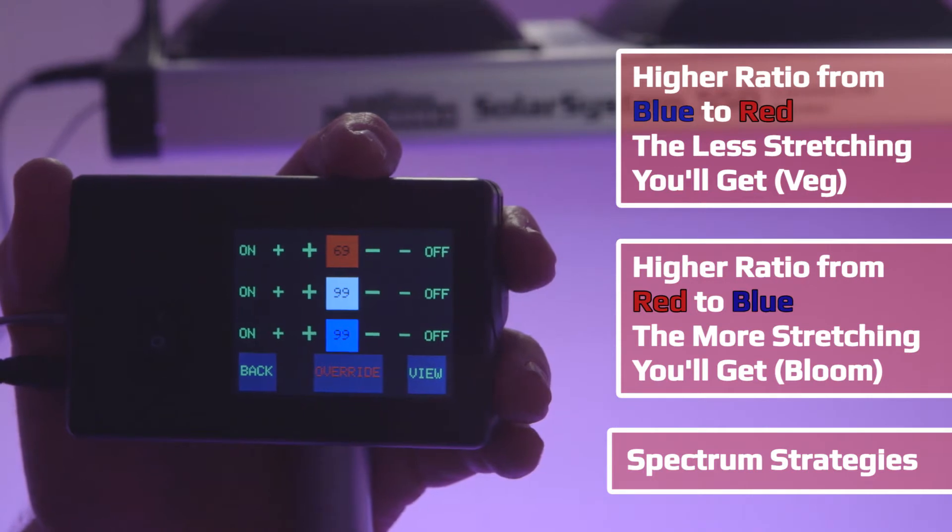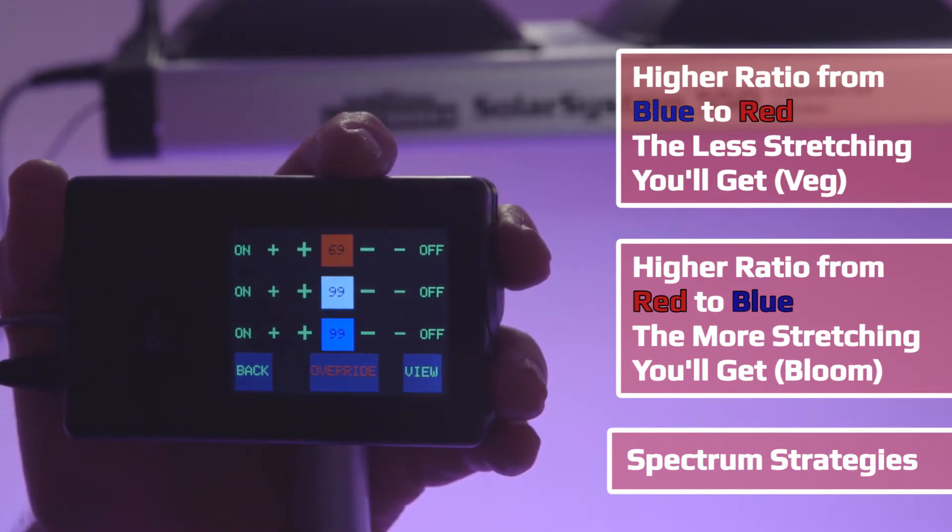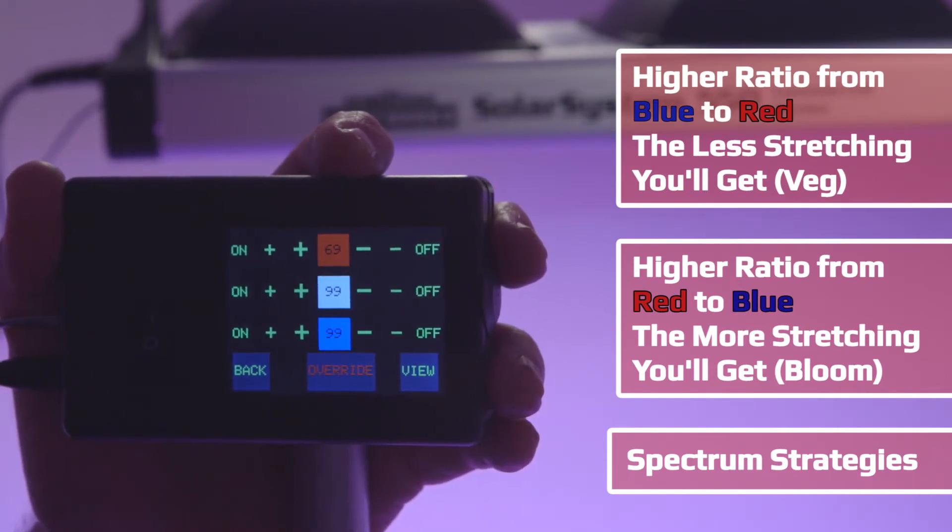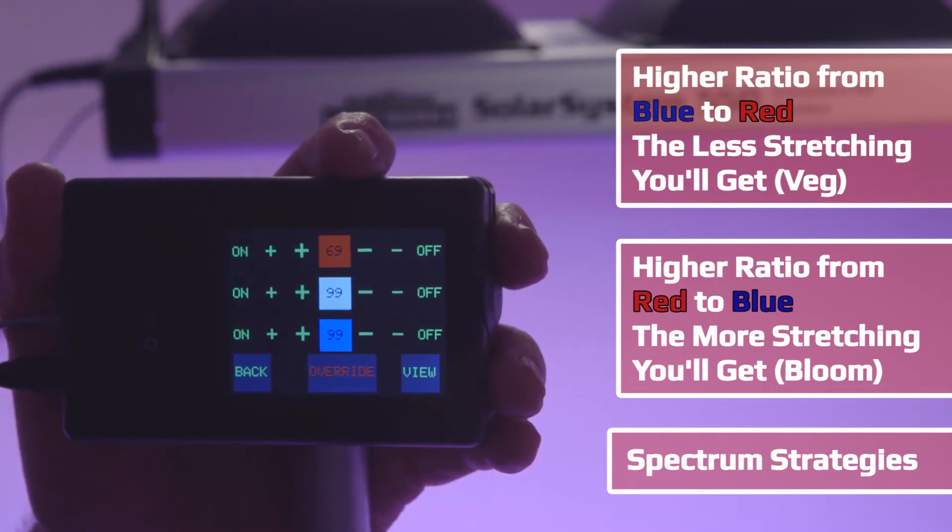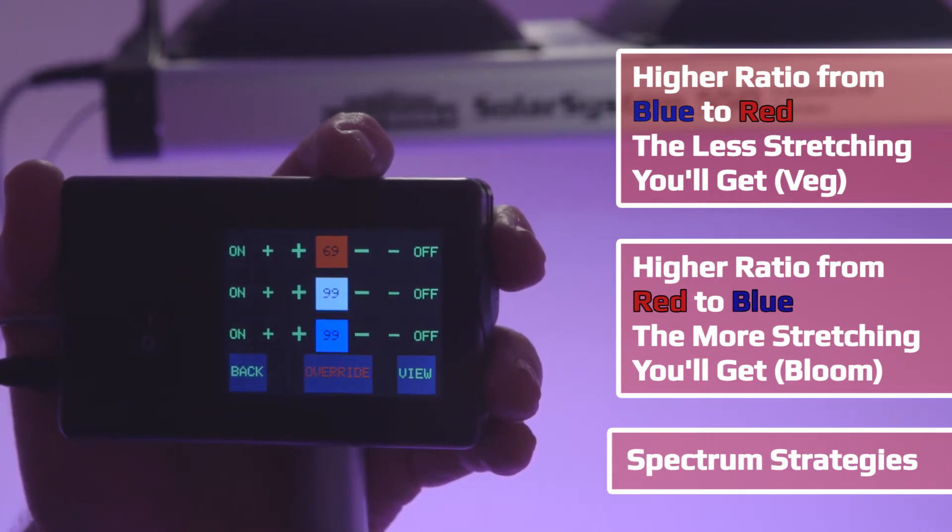In some cases you may want more red in veg to get more height, but that strategy is up to you. As long as you understand higher ratio of red means taller stretched plants, higher ratio of blue means bushier growth with less spacing between nodes. That's the basic difference between veg and bloom modes, and this is very powerful. You'll see the plant reacts to it very quickly.